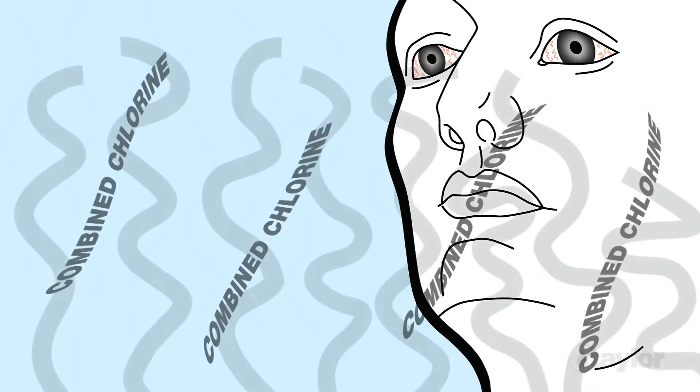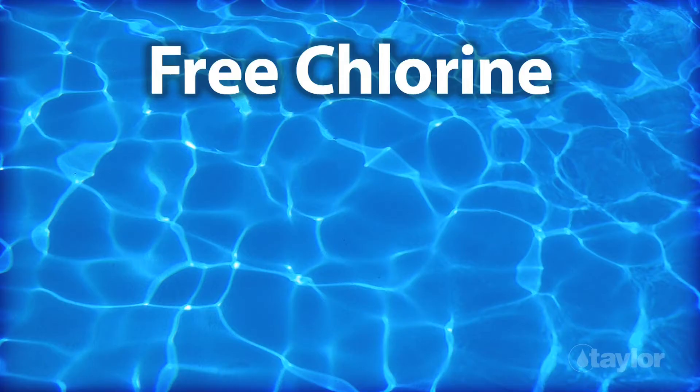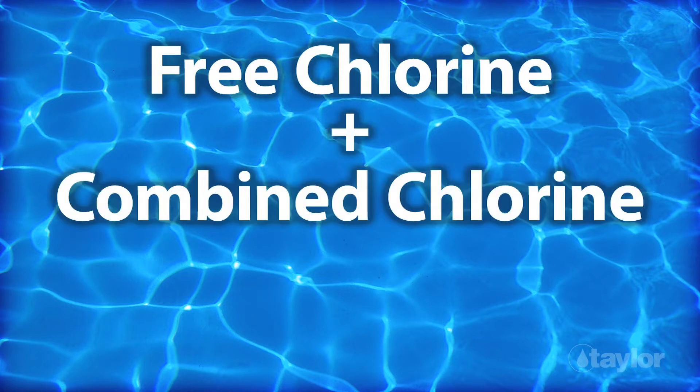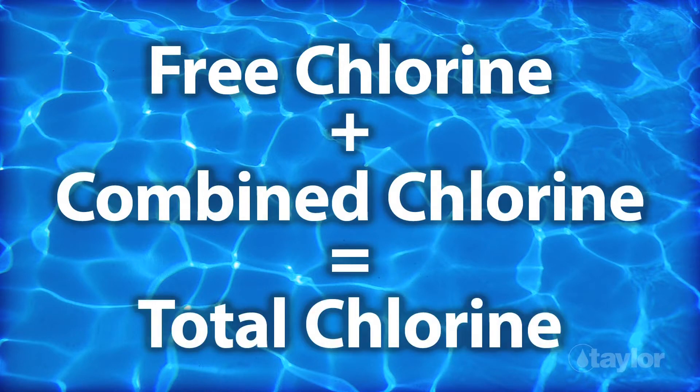This is because chlorine users must keep track of how much of the chemical is in its strongest germ-killing form and how much of it is past its prime. The germ-killing form of chlorine is referred to as free chlorine. When chlorine has done its job, we call it combined chlorine. Combined chlorine has a strong odor and causes eye irritation, even at low levels. Together, free chlorine and combined chlorine make up the total chlorine residual.